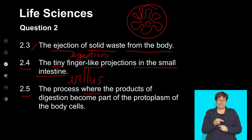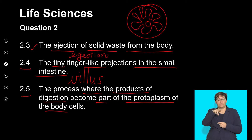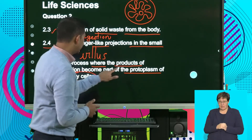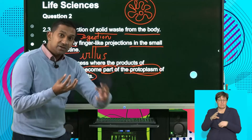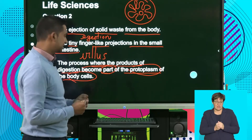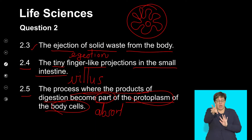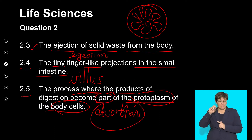2.5: The process where the products of digestion become part of the protoplasm of the body cells. Protoplasm refers to the internal contents of the cell — when the products of digestion get into that, we say that is assimilation. The absorption of the nutrients into the protoplasm or cytoplasm is the process when they become part of the cell.